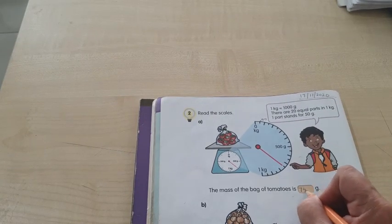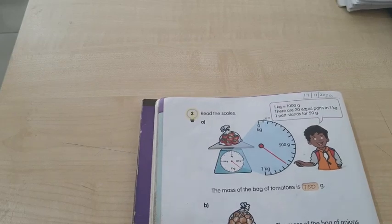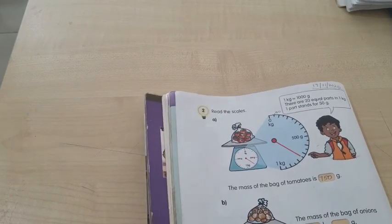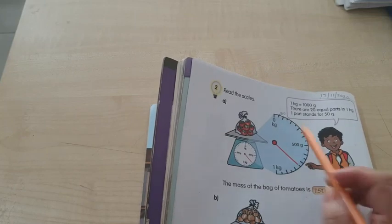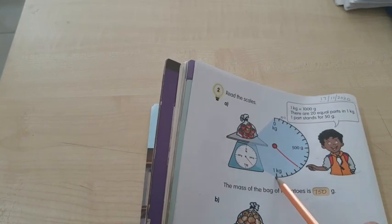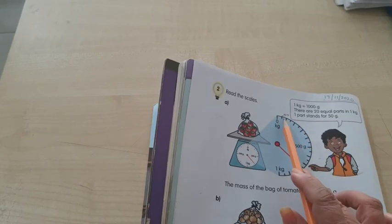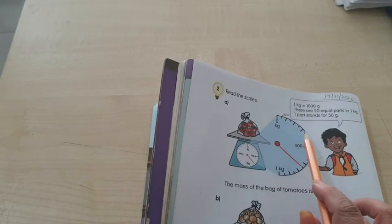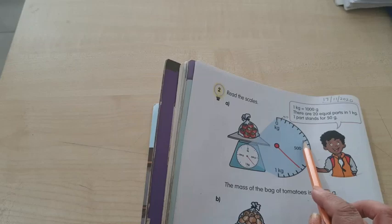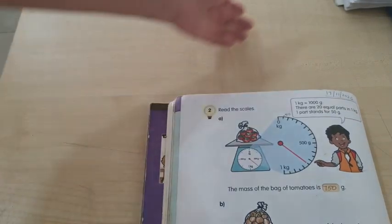You must understand how to count. If there are 20 lines between 0 to 1 kilogram, or 10 lines from 0 to 500, that means each part is 50.